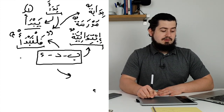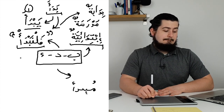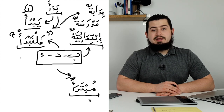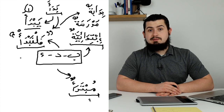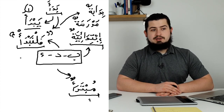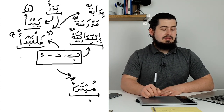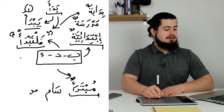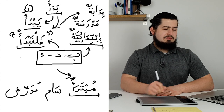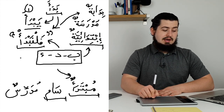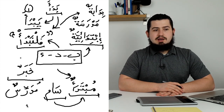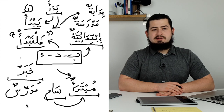The last thing I wanted to mention is that this root also gives us the word mubtada' — mubtada'. When we talk about making noun sentences in Arabic — jumla ismiyya — we have a mubtada' and a khabar. The mubtada' is the thing we're starting the sentence with. For example, 'Sam mudarrisun' — Sam is a teacher. In this sentence, Sam is the mubtada' and mudarris is the khabar.